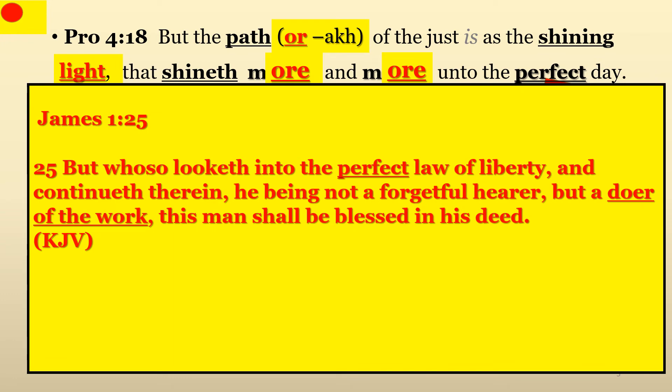And in James chapter 1, verse 25, it adds to this. In 2 Corinthians chapter 3, verses 17 through 18, it also describes how we are converted into the glorious image of the Lord by means of God's perfect law of liberty.